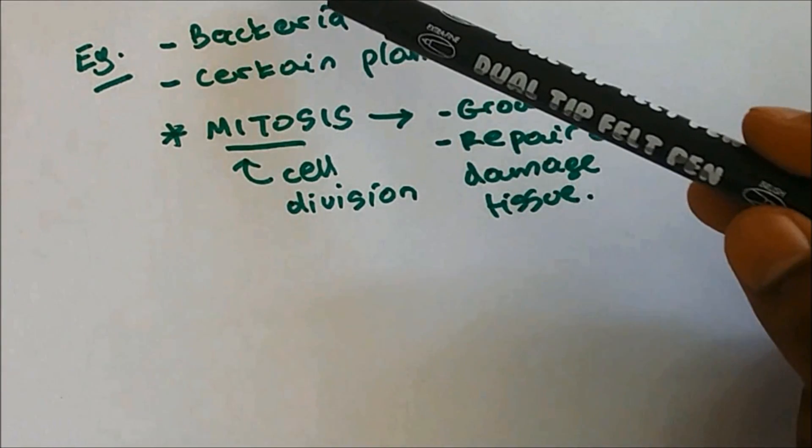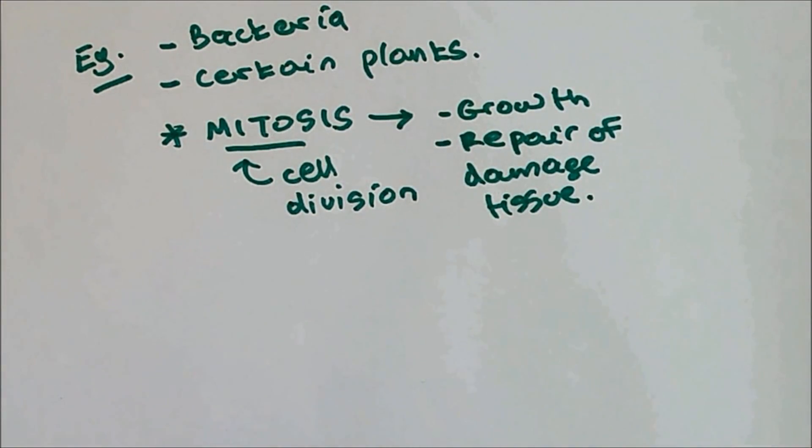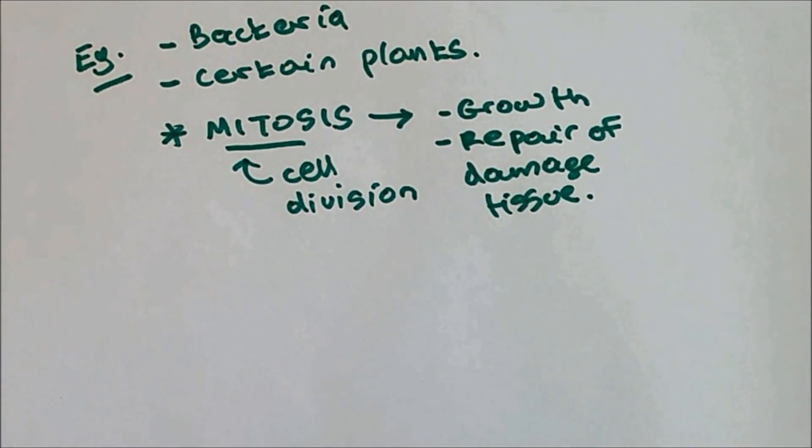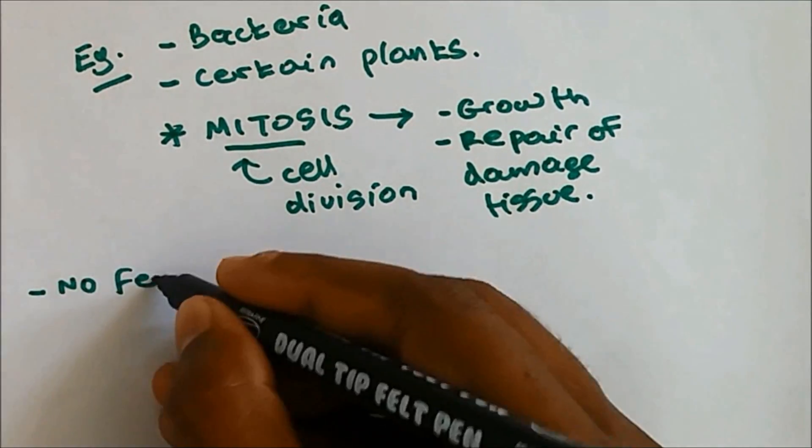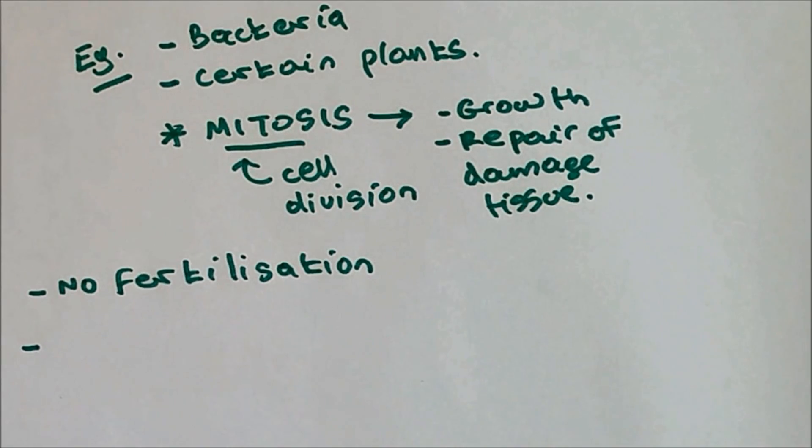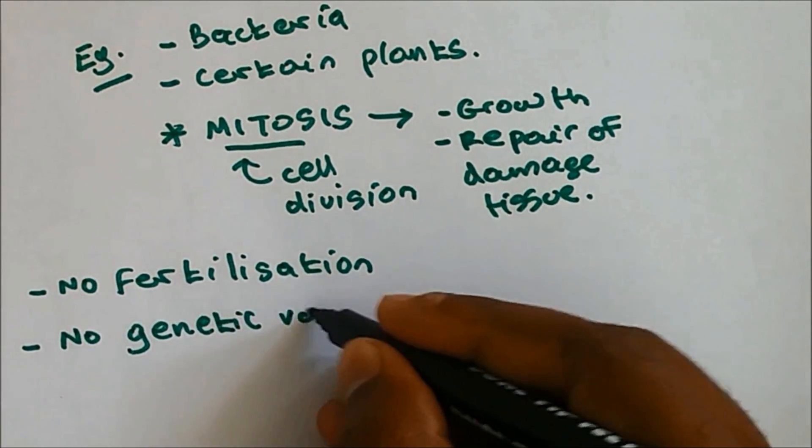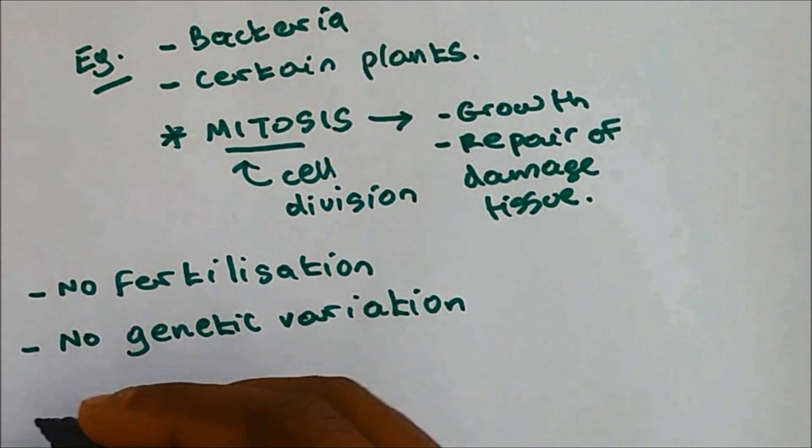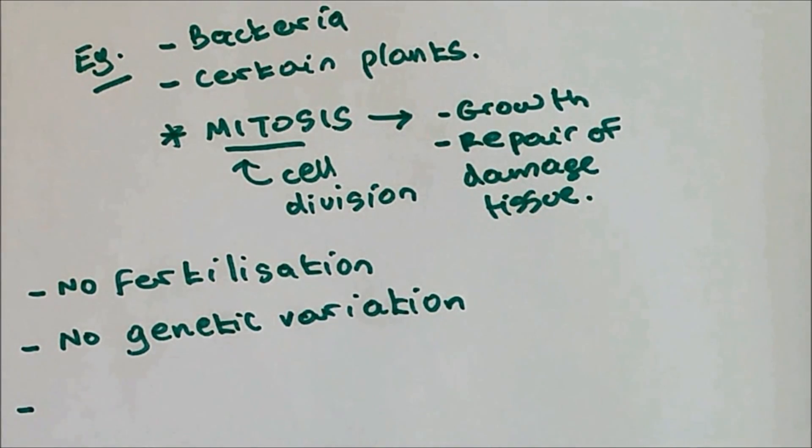In asexual reproduction, I mentioned that there are no gametes, so therefore there is no fertilization. If there is no fertilization, then there is no genetic variation. Having no genetic variation is a disadvantage.